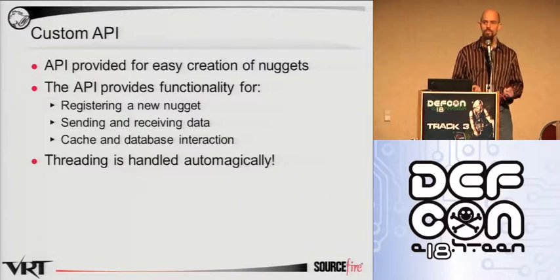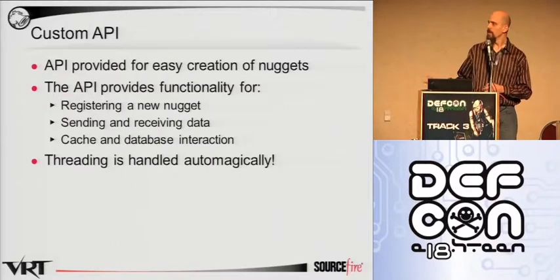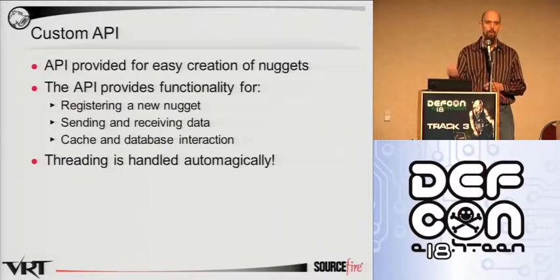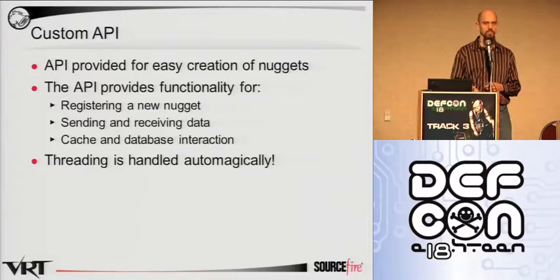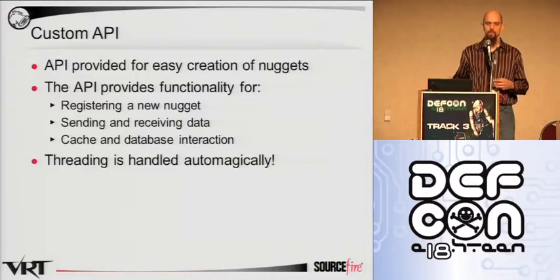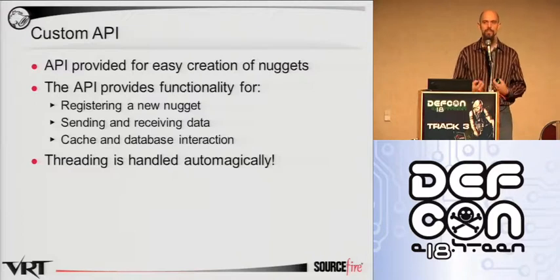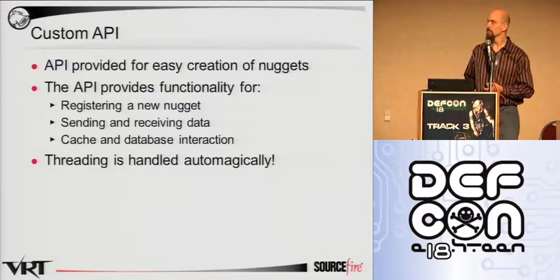Think about what kind of data goes into and comes out of the system. What data am I looking at? What data do I want to generate? We take care of everything — opening up a network socket if you're going to receive data from the dispatcher, threading, all the interactions with the database. We want to make sure all you have to do is deal with the data you're getting and the data you're trying to create or present.